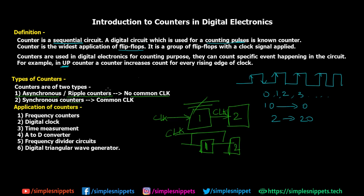So what are some of the applications of counters? Counters have huge applications in digital circuits. There are frequency counters which count frequency, digital clocks, time measurement, A to D converters for analog to digital conversions, and frequency divider circuits where some frequencies can be divided using counters. There are also digital triangular wave generators. There are a lot of applications — I could have listed many more — and we'll take a look at a few of them in further videos. Just understand that counters have a huge application in digital electronics as a whole and are widely used.